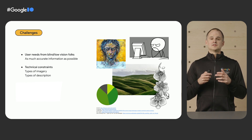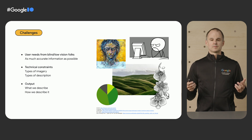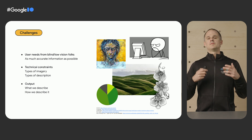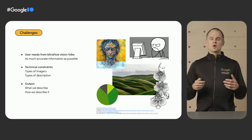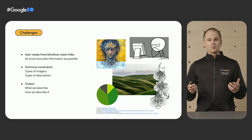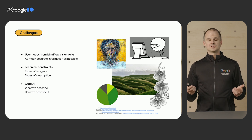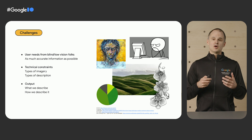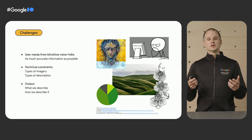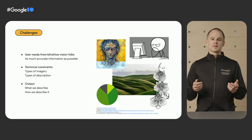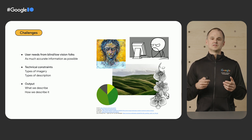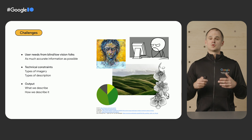We also had to consider what information to present — what was the best way to describe an image without being overwhelming, and which elements could we reliably detect with high accuracy? Finally, we had to think about the model outputs, especially if an image contained people. We wanted to ensure the results were respectful, safe, and fair.